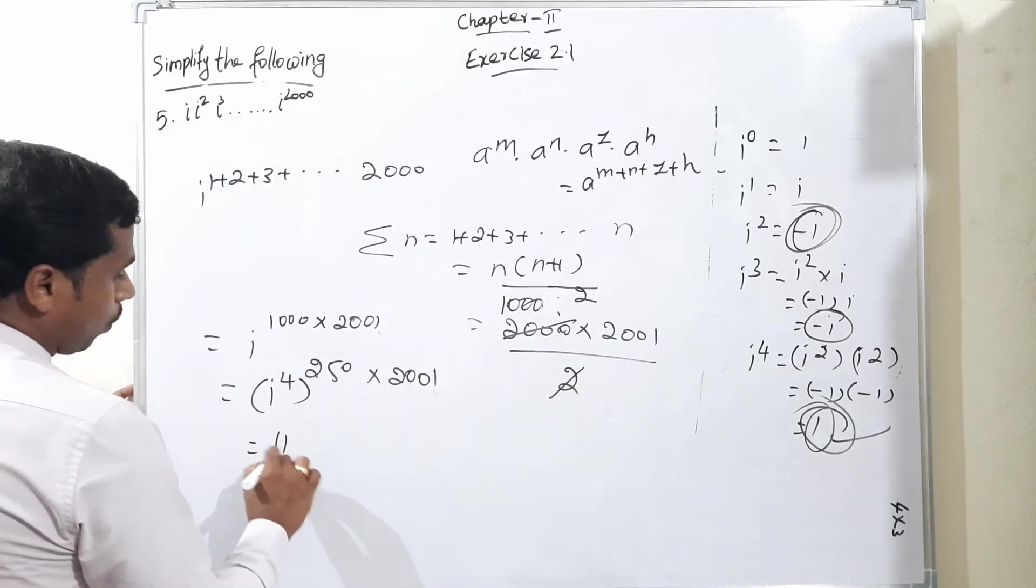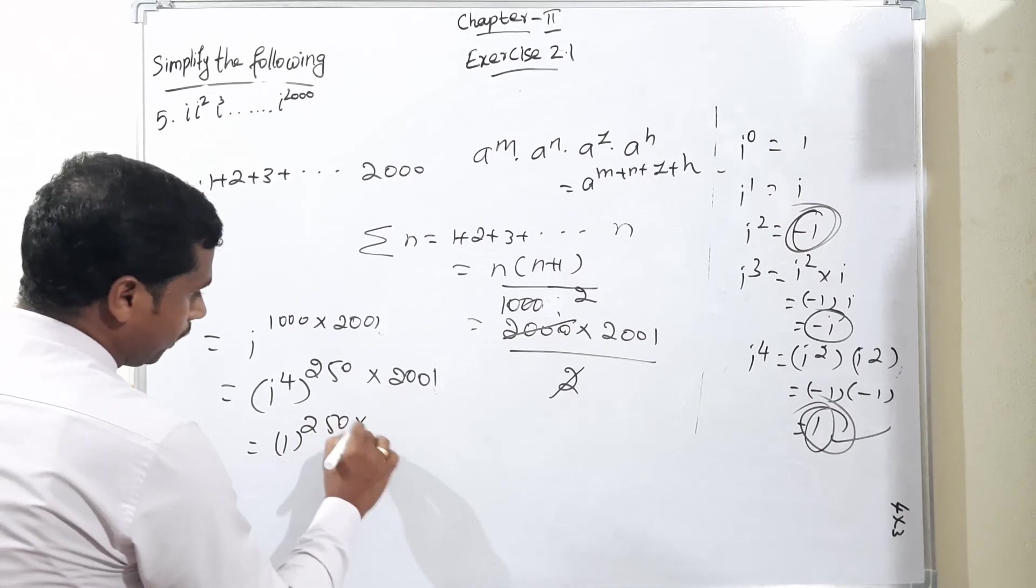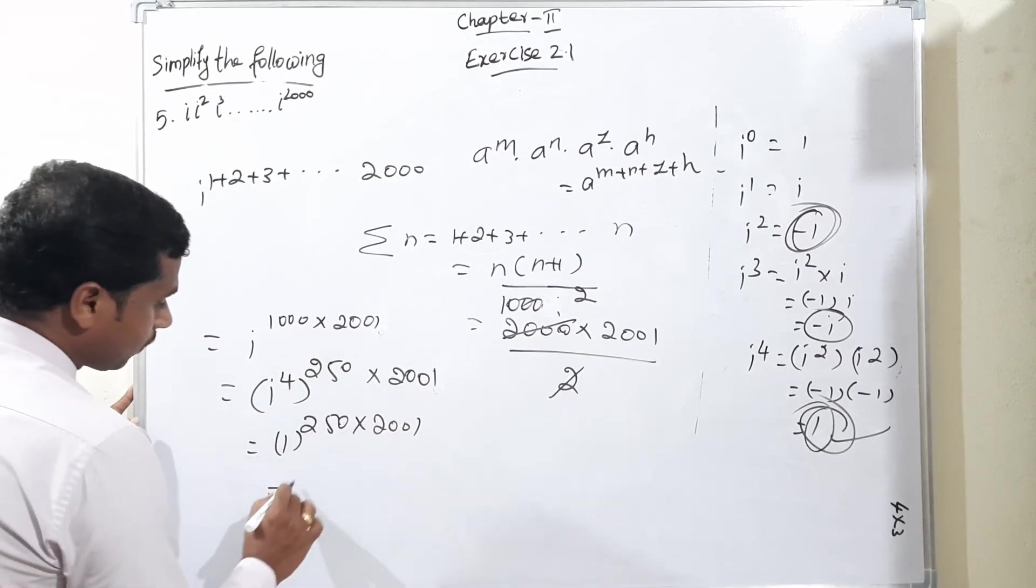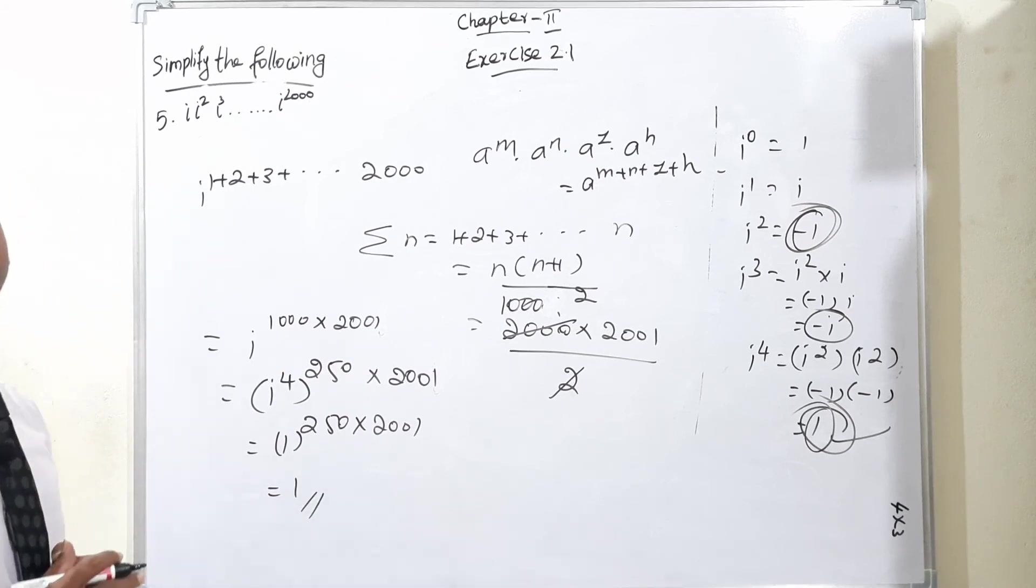So again i to the power of 4 is 1, so 1 to the power of 250 times 2001. 1 to the power of anything means the value will be 1. This is our final answer.